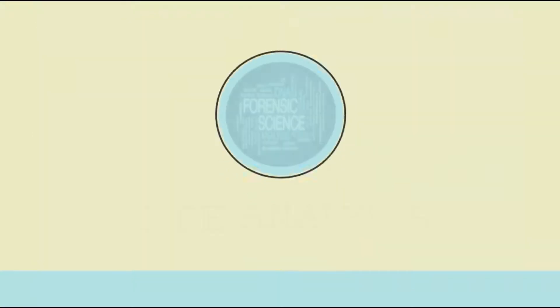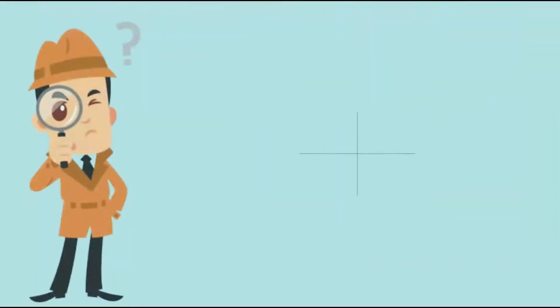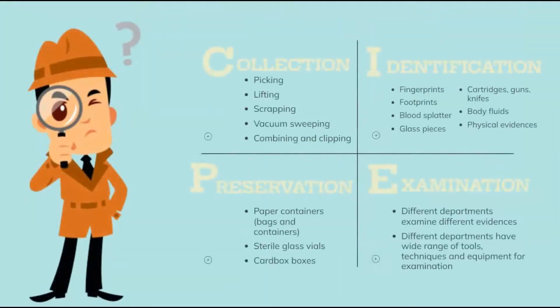CIPE Analysis. The full form of CIPE is Collection, Identification, Preservation, and Examination. These four are the main four pillars on which forensic science stands.